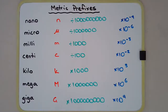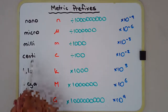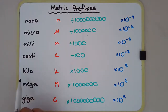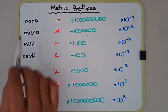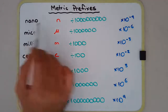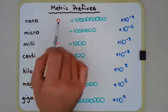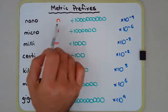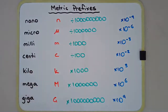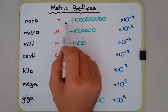In this video I'm going to talk about some common metric prefixes. Some of these you've seen before, such as kilo and centi, like centimeters or kilograms. Let's start off with nano — its symbol is 'n', so for example nanosecond or nanometer would be written as ns or nm.